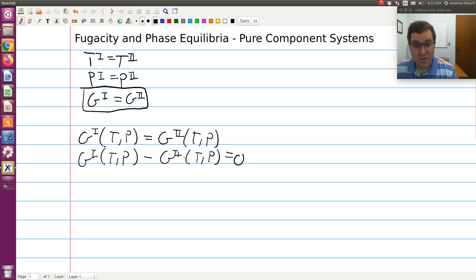So whenever I have the difference in molar Gibbs free energies at the same temperature, essentially an isothermal process, the bell that dings in my head is fugacity, or definition of fugacity.